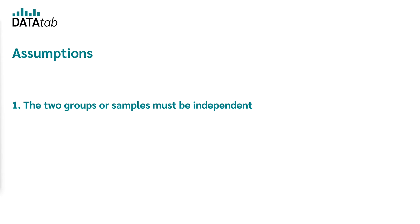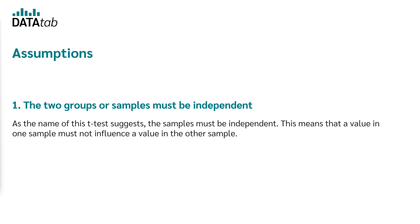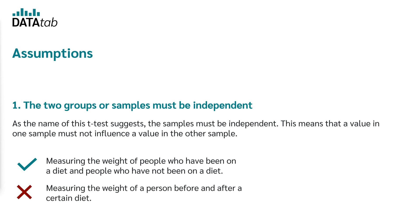The first assumption is that the two groups or samples must be independent. As the name of this t-test suggests, a value in one sample must not influence a value in the other sample. This is the case when you measure weight once from a group that dieted and once from a group that did not diet — but not if you measure the weight of the same people before and after a diet.